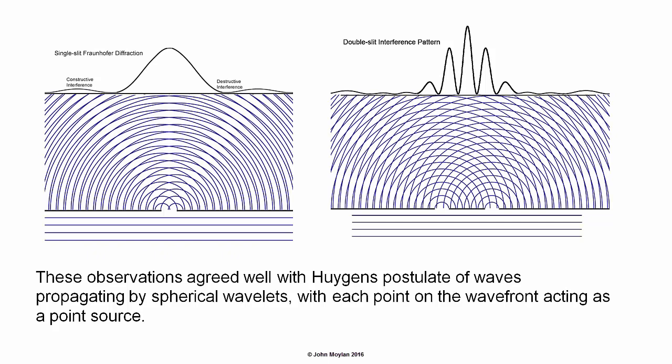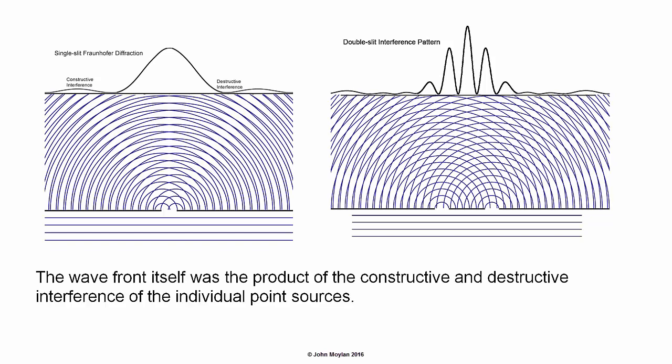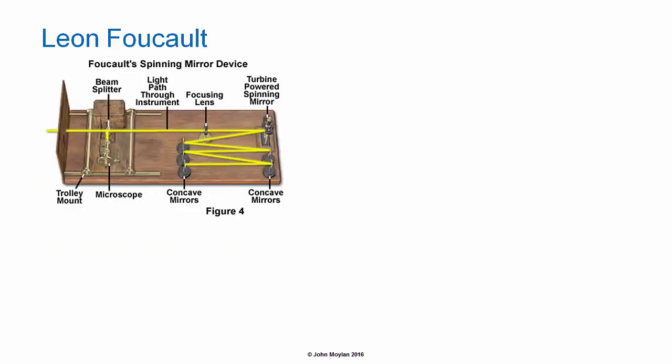You can see in the diagram, that there is interference between the wavelets, bending around each side of the single slit, and again around each side of the double slits. The wave front itself was the product of the constructive and destructive interference of the individual point sources.